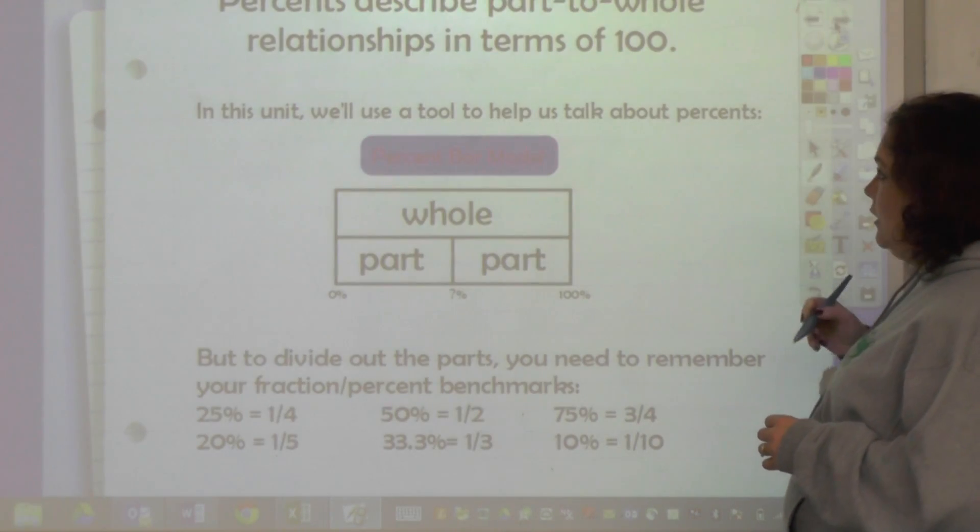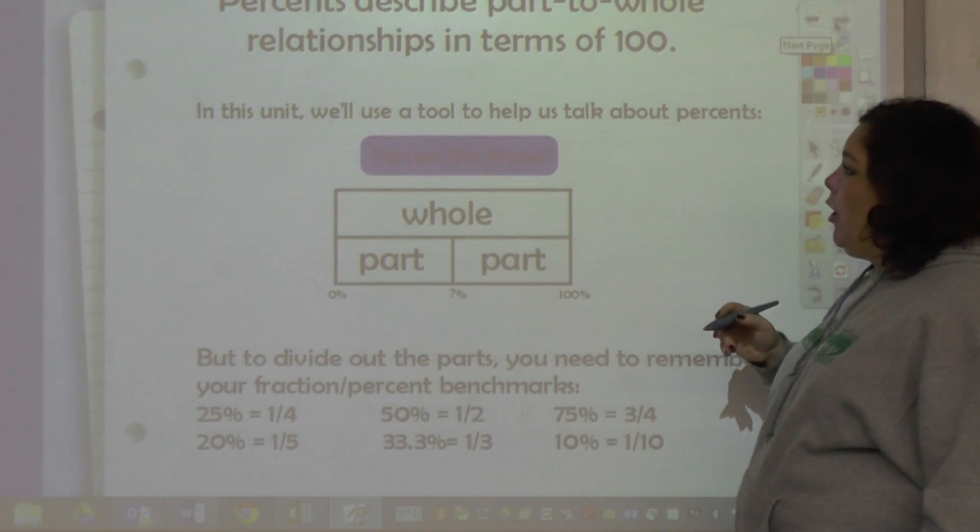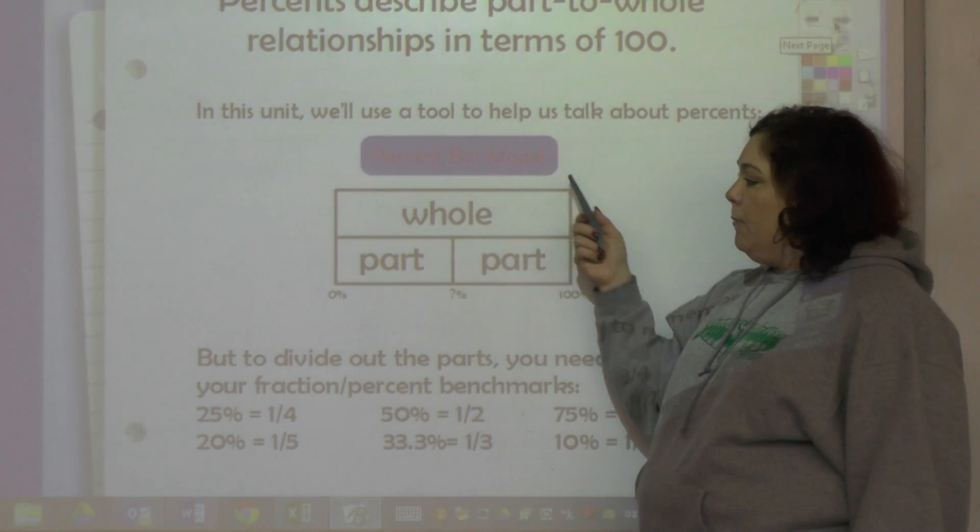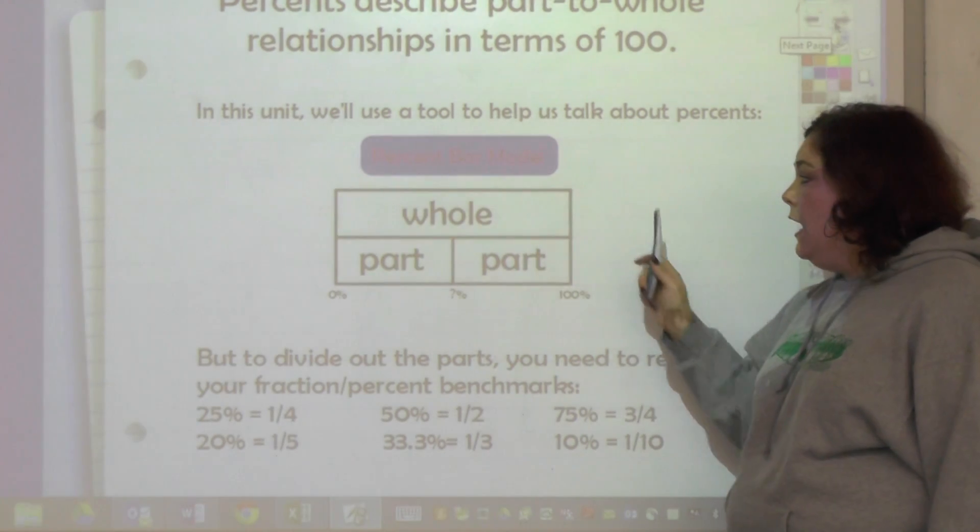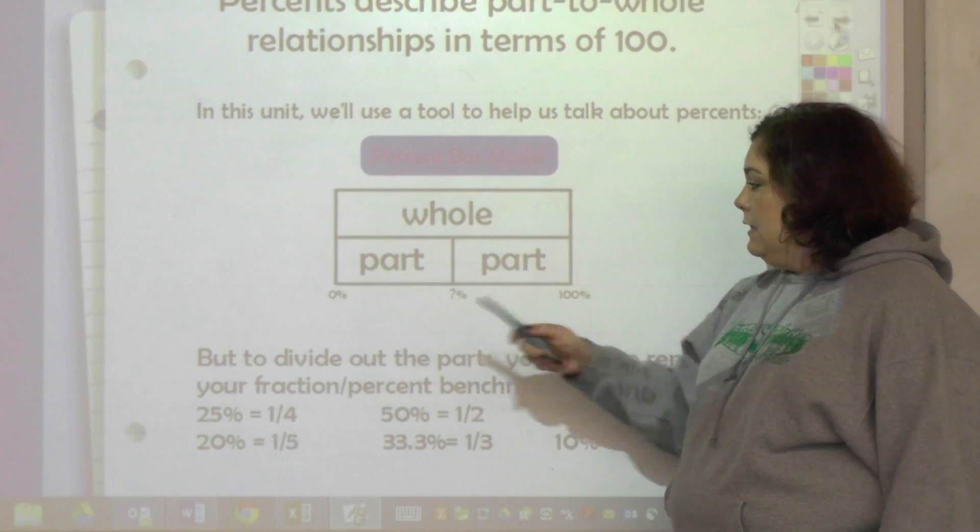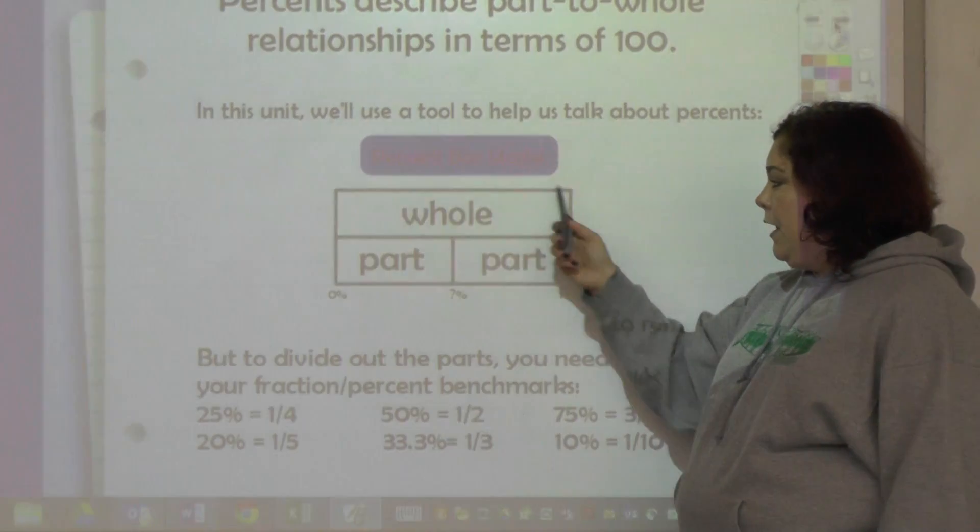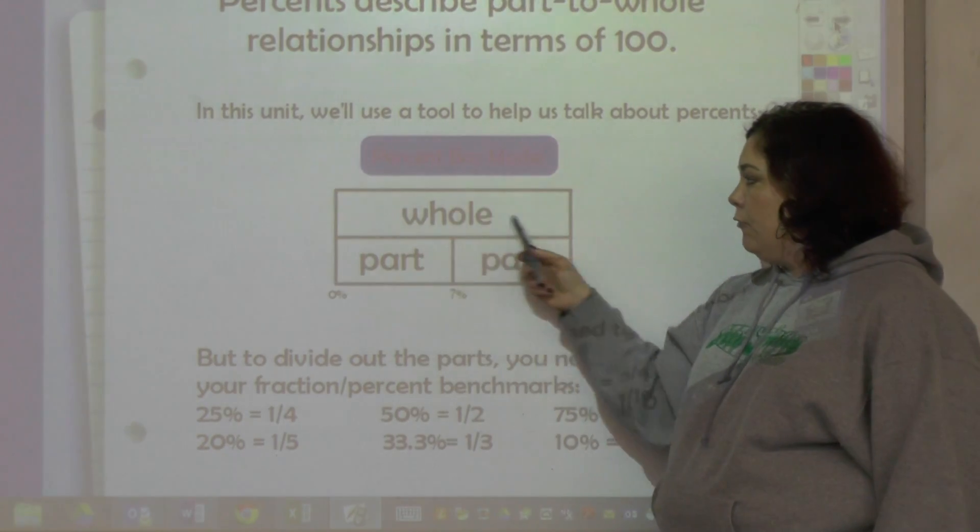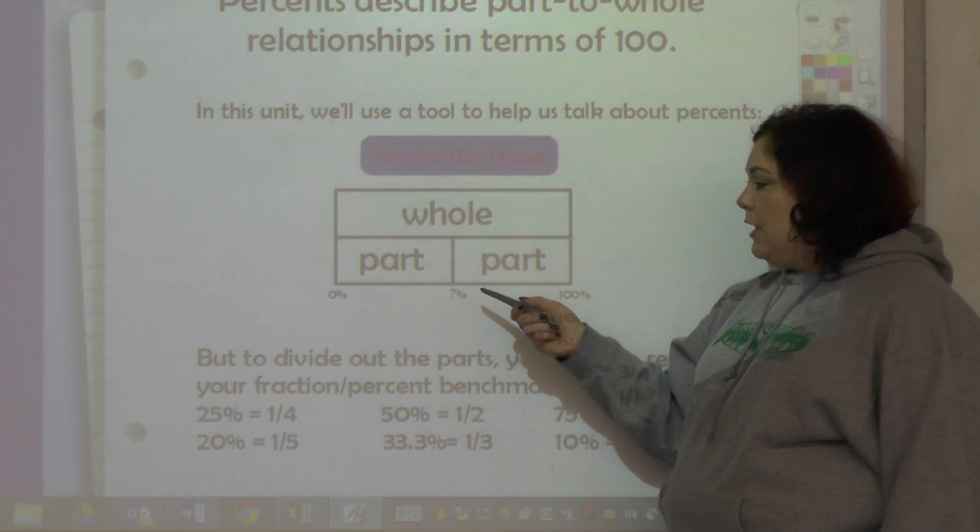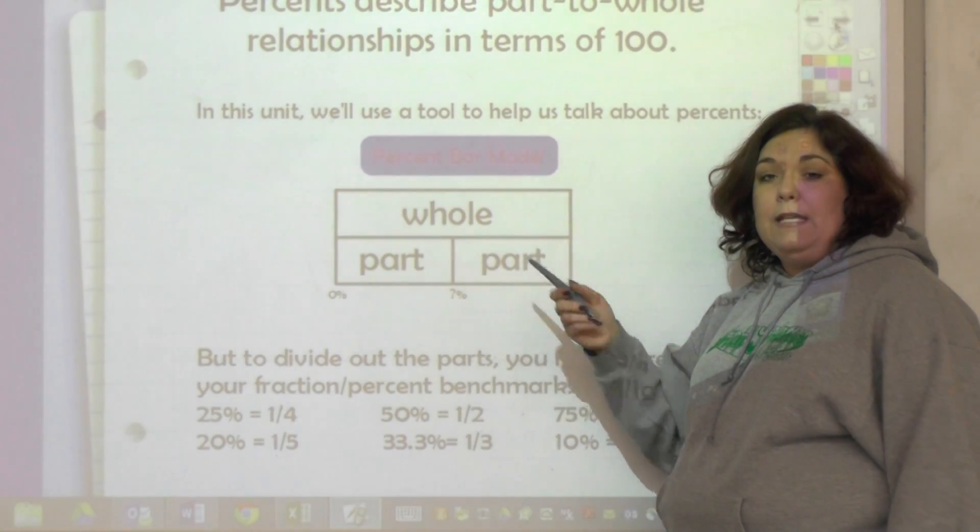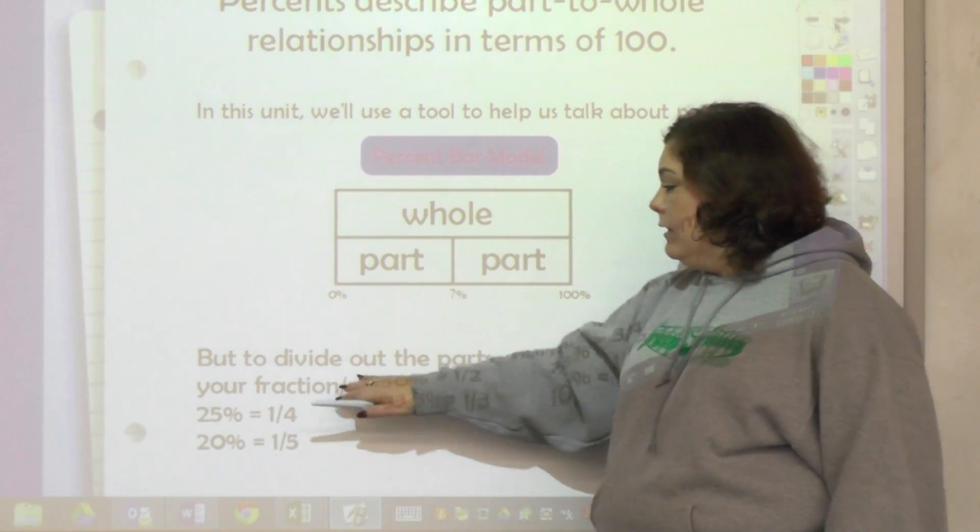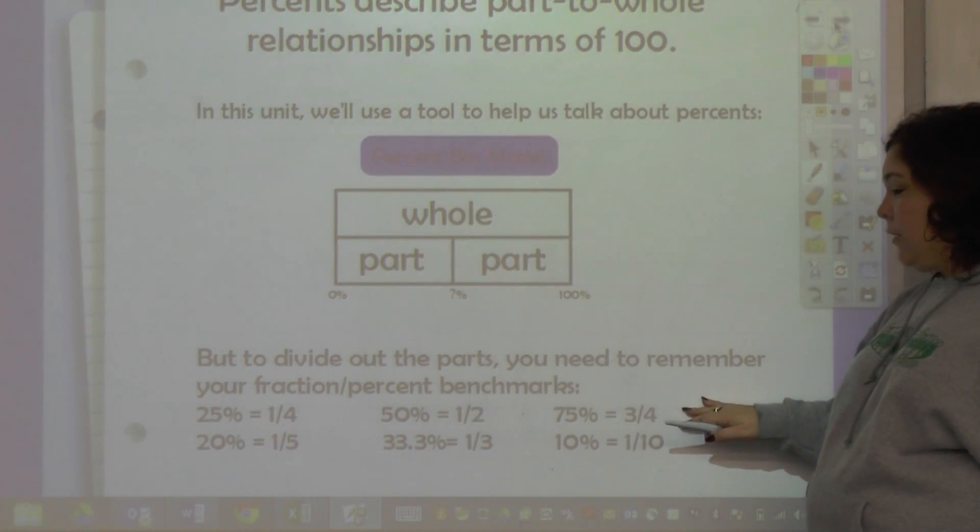Percents are described as a part-to-whole relationship in terms of 100. This is the percent bar model, and this is what we're going to be using. Sometimes it has a double bar and sometimes it's just a lower bar. This whole bar represents 100%, so 100 of whatever you're talking about. This considers the part and the part, so if this is divided into two, it's half and half, which equals 50%.